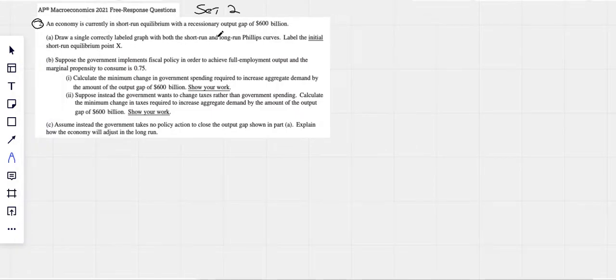The economy is currently in short-run equilibrium with a recessionary output gap of $600 billion. They're not asking us to draw that, but let's just draw it, make sure we recognize we've got long-run aggregate supply, short-run aggregate supply, aggregate demand, price level on the vertical, real GDP on the horizontal.